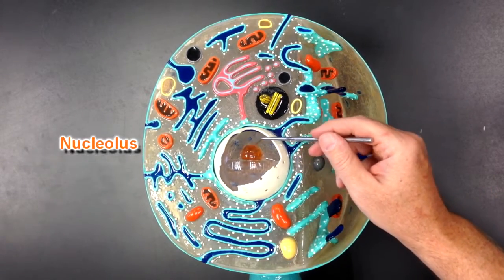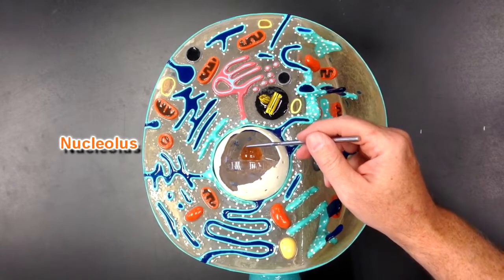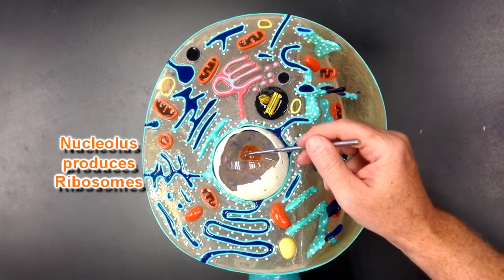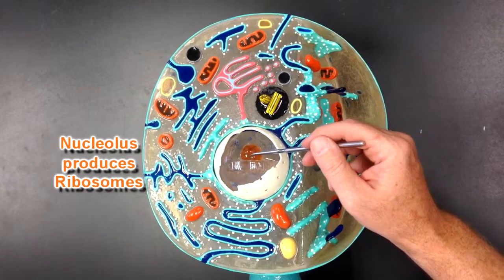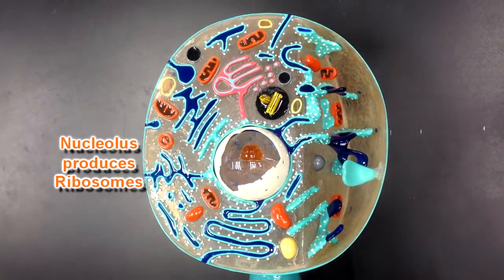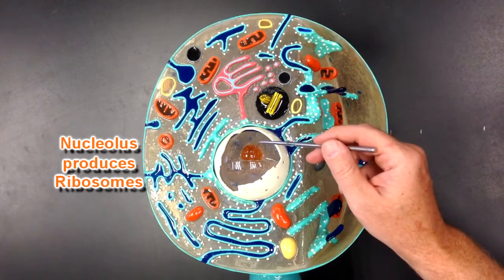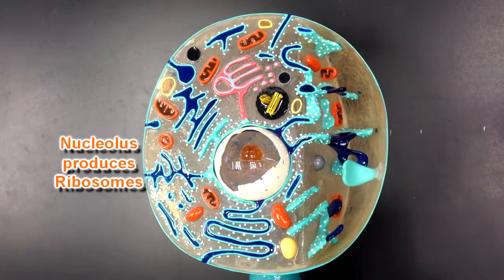We have the nucleolus right here and this nucleolus is responsible for making ribosomal RNA which makes up most of a ribosome. So some people say that the nucleolus makes ribosomes.